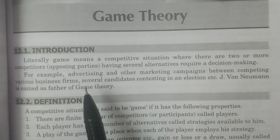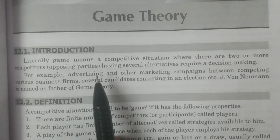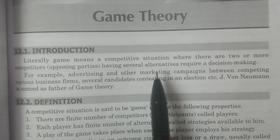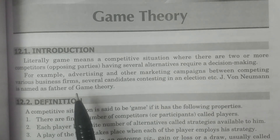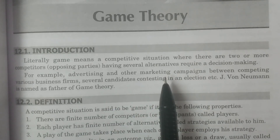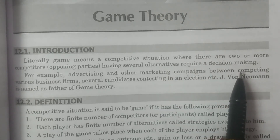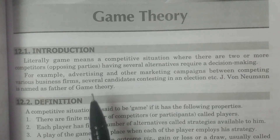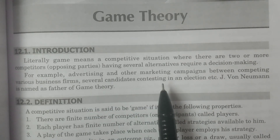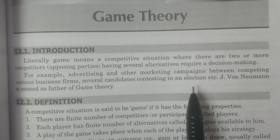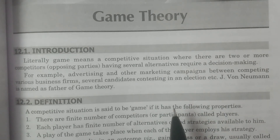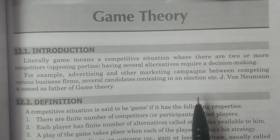What is meant by a game? A game means a competitive situation where there are two or more competitors, having several alternatives — which means several strategies requiring decision making. For example, advertising and other marketing campaigns between competing business firms, and several candidates contesting in a particular election — these are examples of a game.